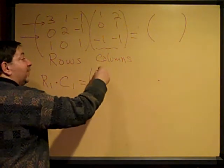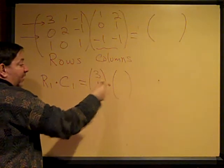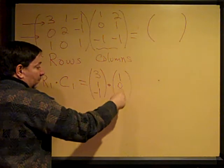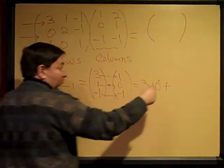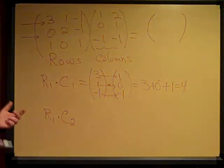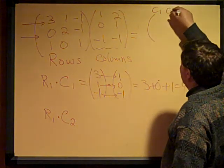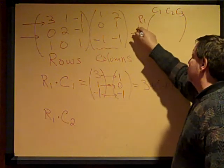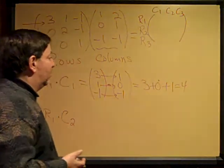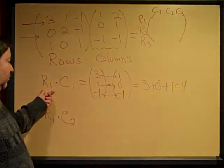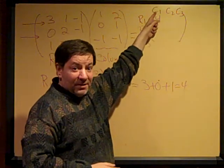I'm going to write everything vertically. Take row 1, which is 3, 1, negative 1, and dot it with column 1, which is 1, 0, negative 1. Just multiply across: that product is 3, that product is 0, and that product is 1. Those 3 numbers add up to 4. Where do I put the 4? I put it in row 1, column 1. I know this is the right place because when I look to the left I see row 1, and when I look to the top I see column 1.